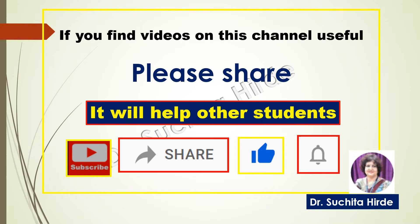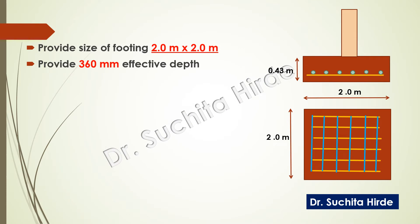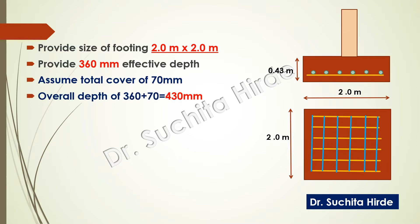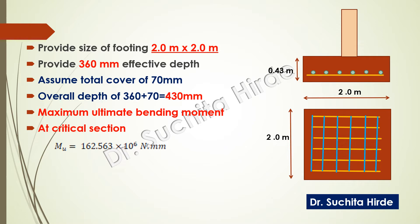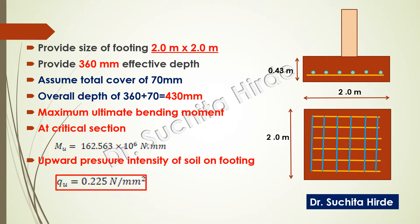To understand today's video we will need data from our previous videos. We have already provided the size of footing as 2 meter by 2 meter, the depth of footing as 360 millimeter. We have assumed a cover of 70 millimeter so overall depth is 430 millimeter, and we have calculated the maximum bending moment at the critical section and the upward pressure intensity of soil as 0.225 newton per millimeter square.